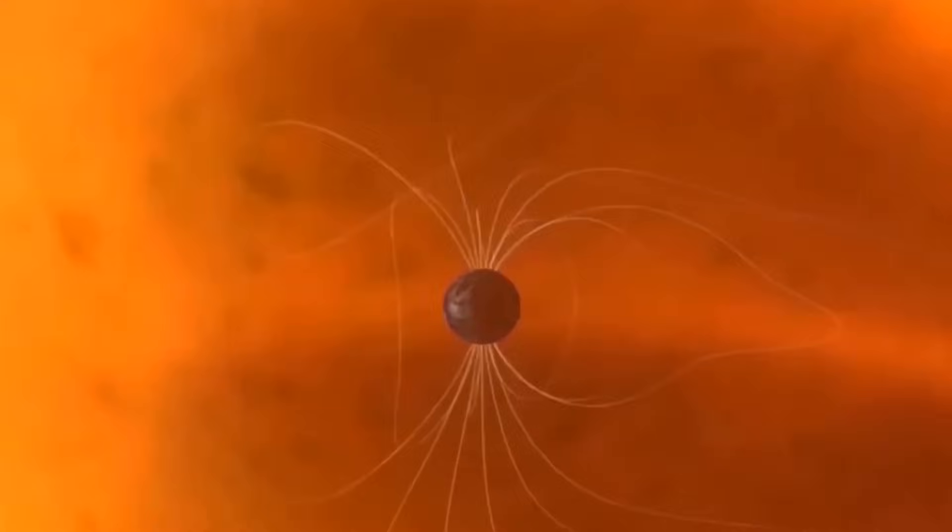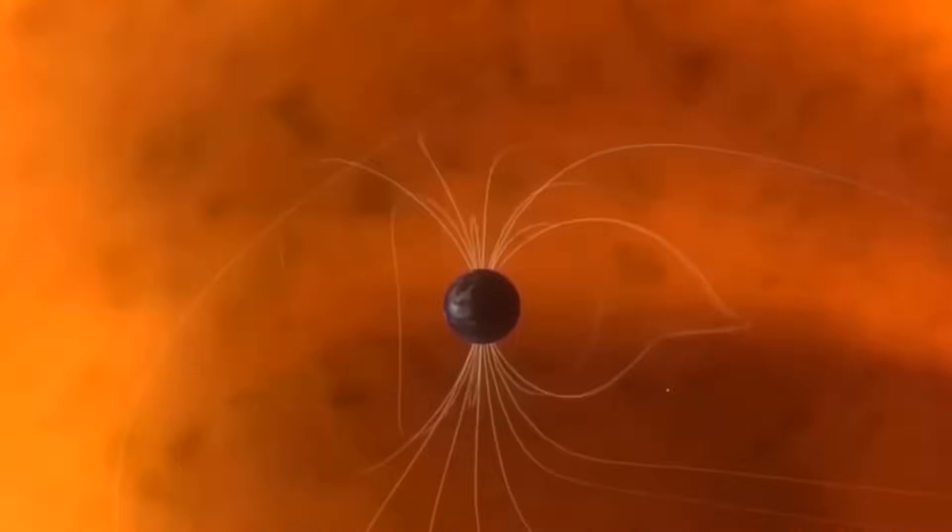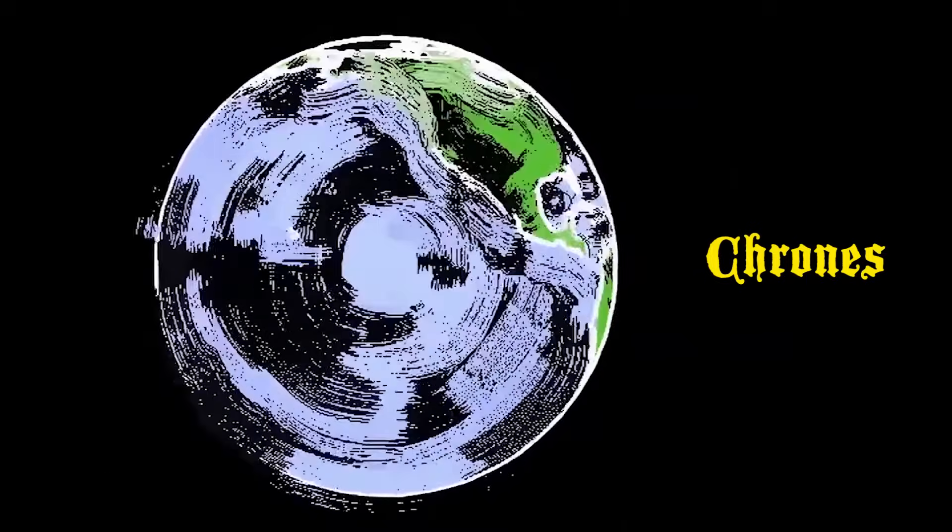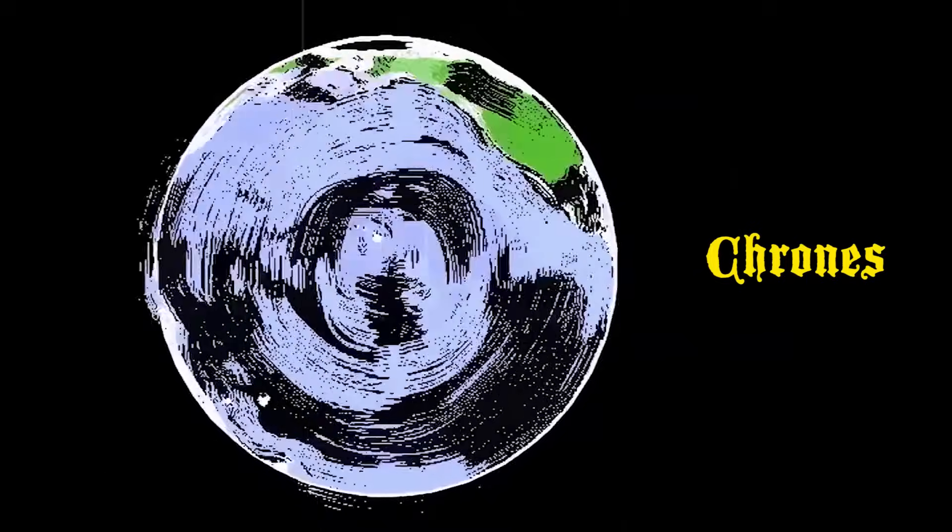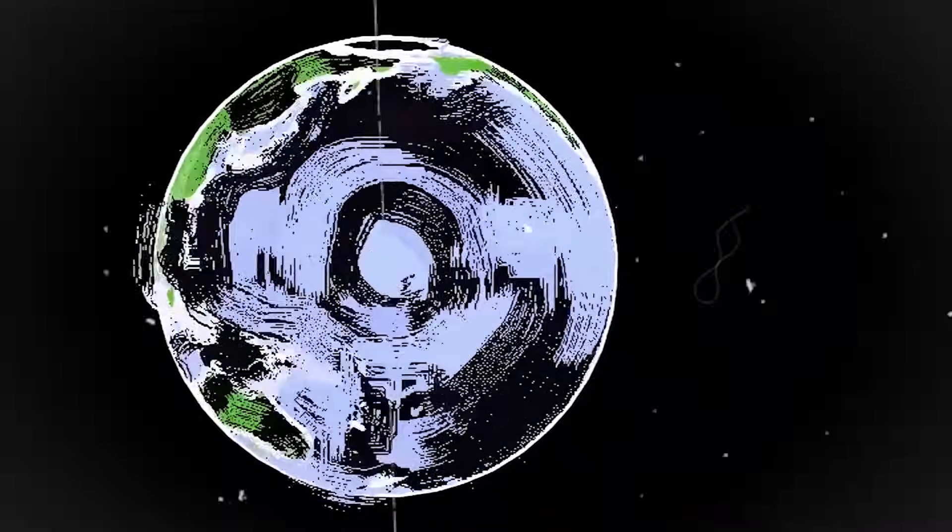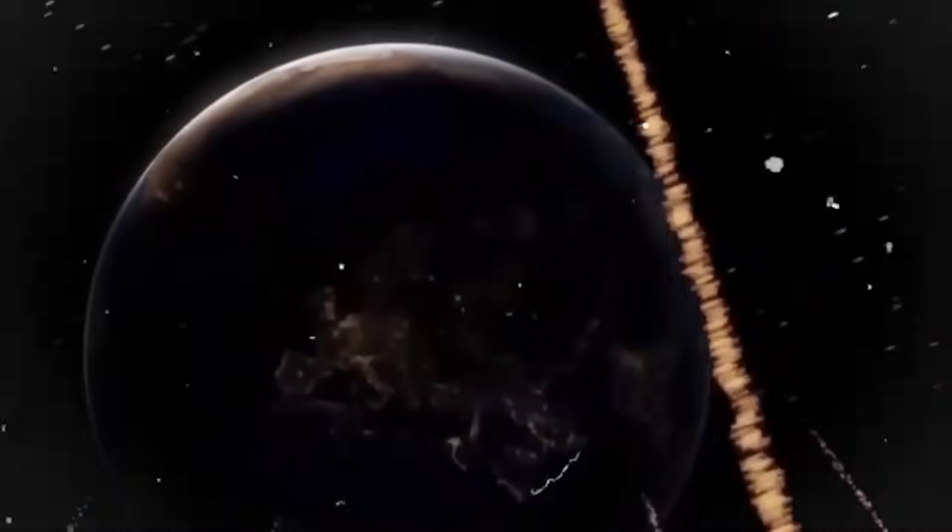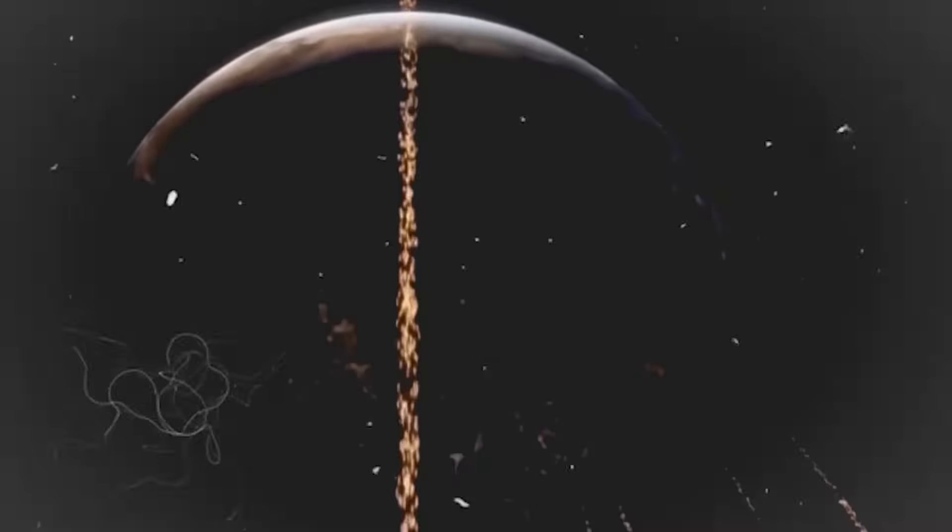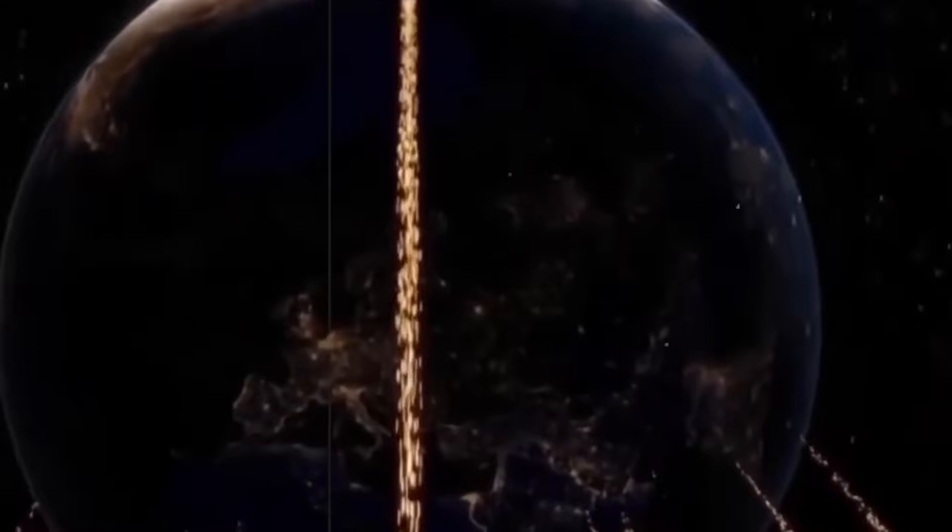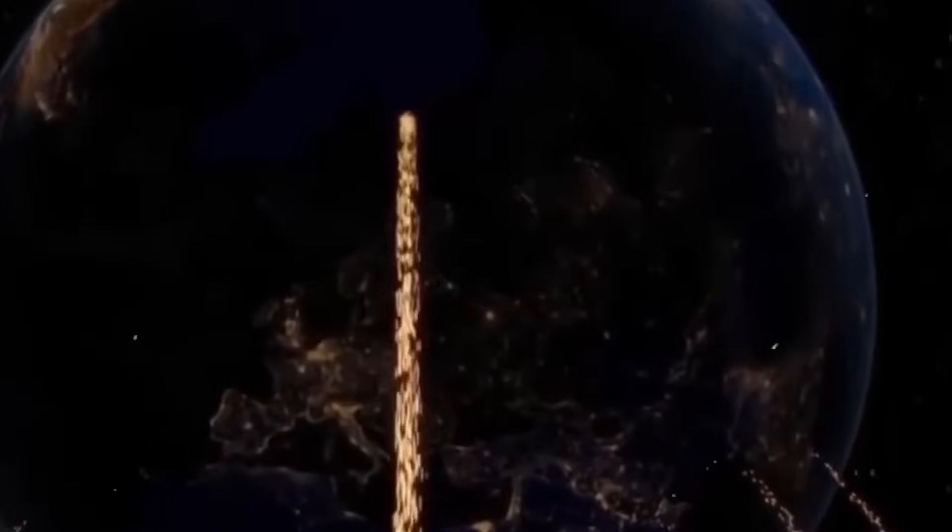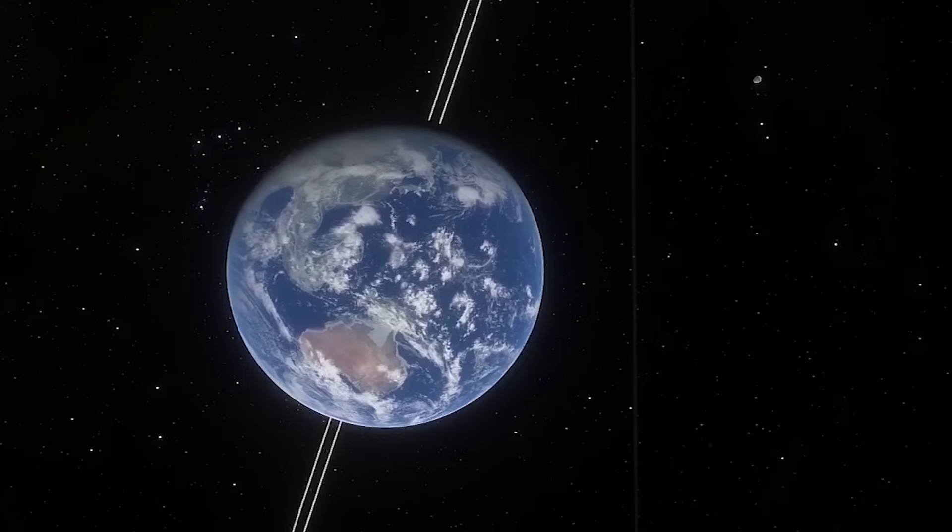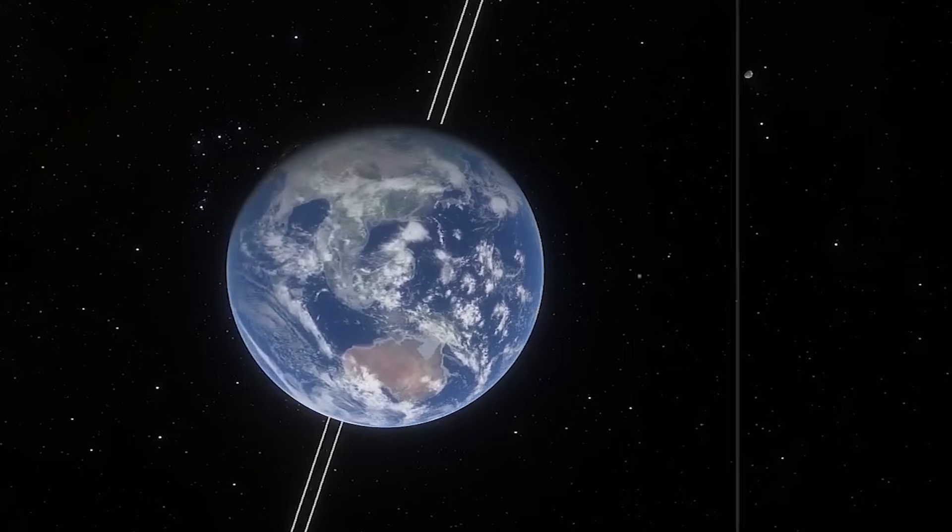In geological terms, crons refer to periods during which the Earth's magnetic field maintains a consistent polarity, either normal or reversed. These crons can last from a few thousand years to several million years. Studying these crons provides invaluable insights into the behavior of the Earth's core and the dynamics of the geodynamo process responsible for generating the magnetic field.